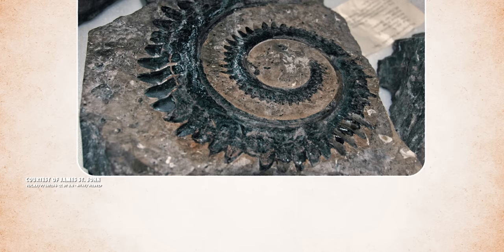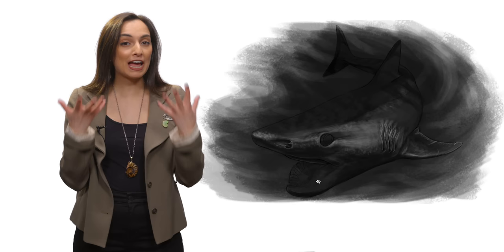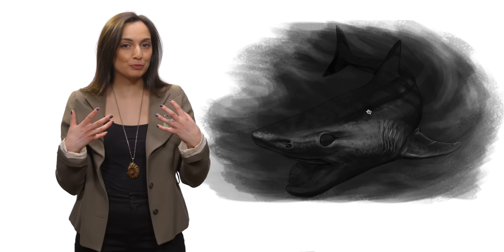Almost a decade after its first discovery, a Helicoprion preserved in a more natural position was discovered, and showed that the whirl definitely came from the mouth. Whether it came from the upper or lower jaw was still up for debate. And just where it fit in the mouth was another source of wild speculation. Some thought it would curl out and downward, while others imagined it would sit where the tongue should be, or even at the back of the throat.